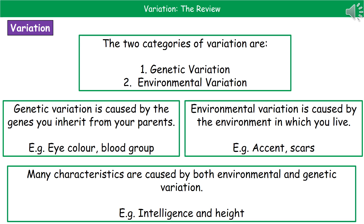Genetic variation is caused by the genes you've inherited from your parents, and this will include characteristics like eye colour or your blood group. Environmental variation is caused by the environment in which you live — so these will be things like what accent you've got, whether you've got any scars, tattoos, things like this.